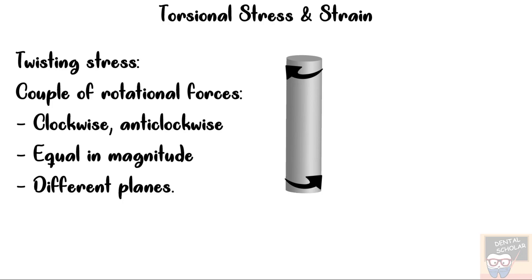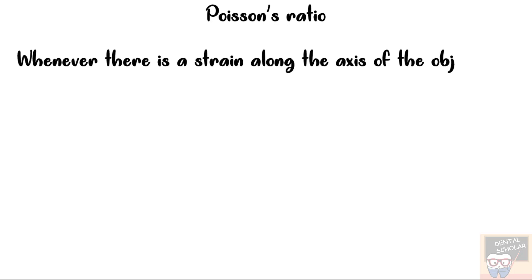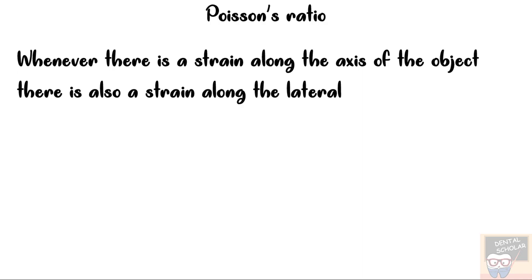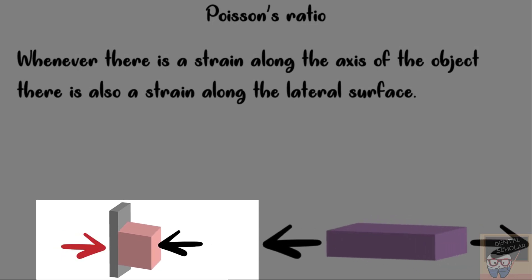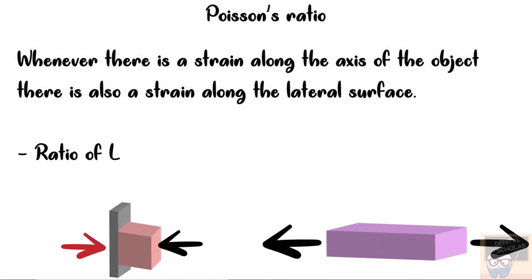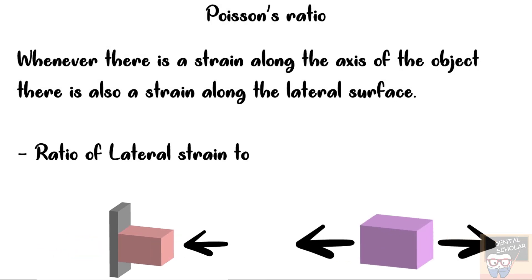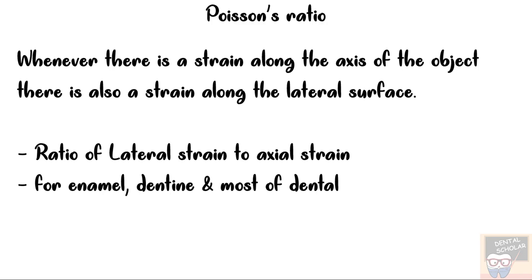Let me also tell you about Poisson's ratio. Whenever there is a strain along the axis of an object, there is also a strain along the lateral surface. When an object is compressed along its axis, it expands along its lateral surface; when it is elongated, its diameter or thickness reduces. The ratio of this lateral strain to axial strain is called Poisson's ratio. It has no unit, and for enamel, dentine, and most dental materials, the value is approximately 0.3.